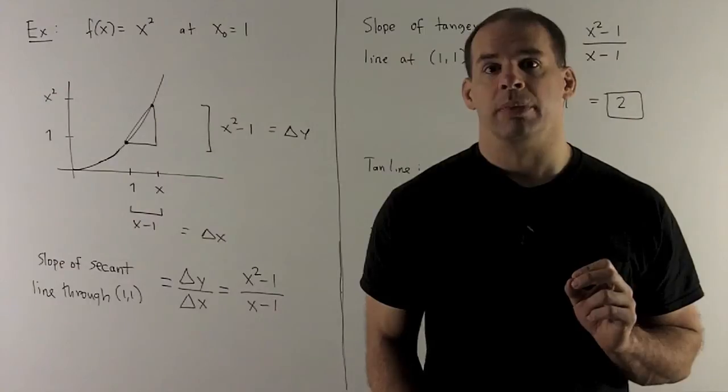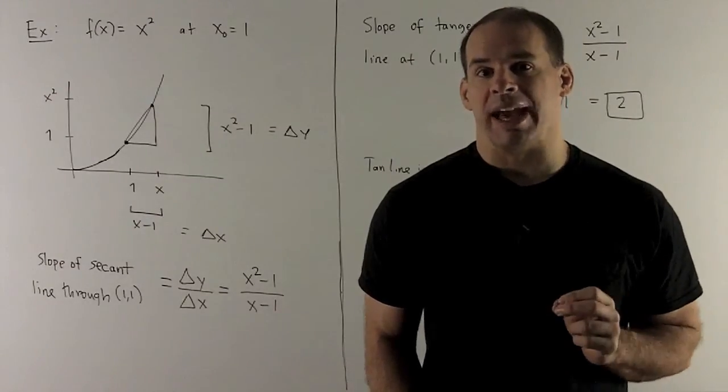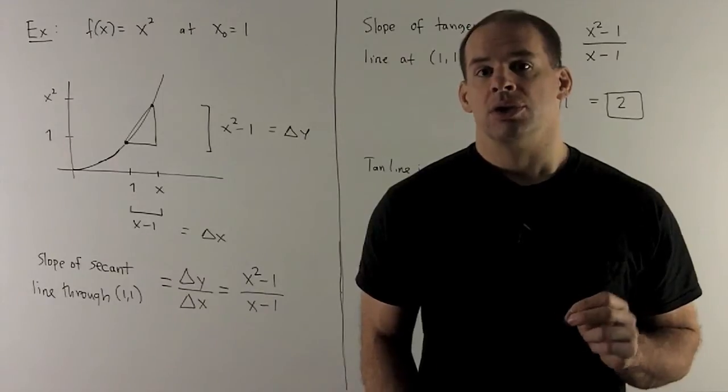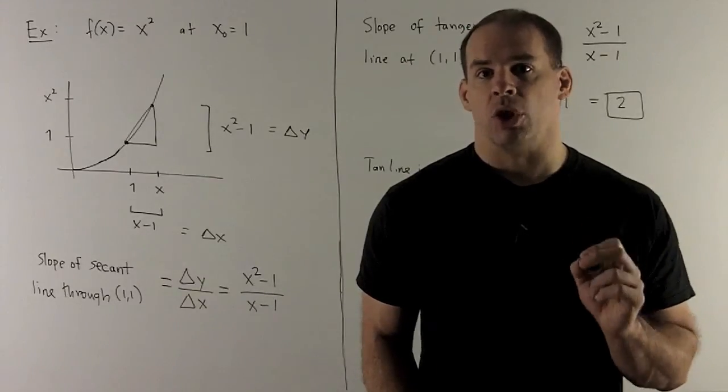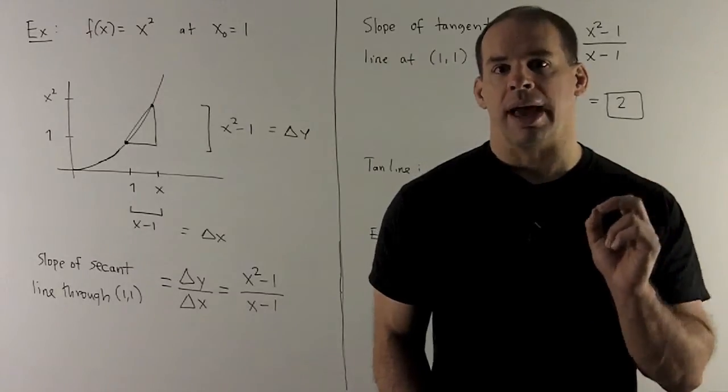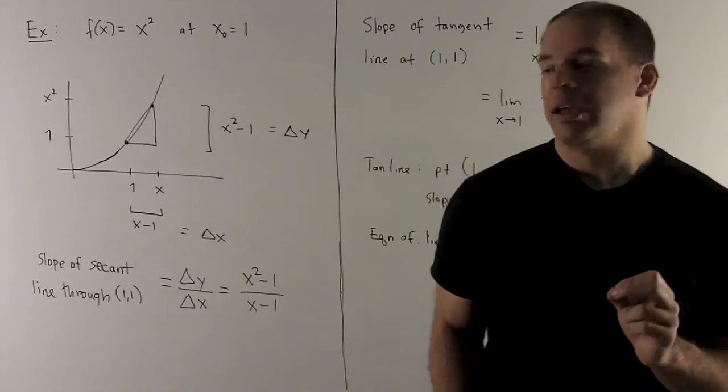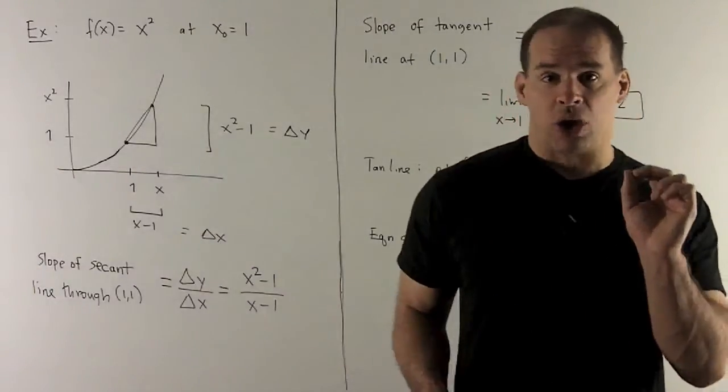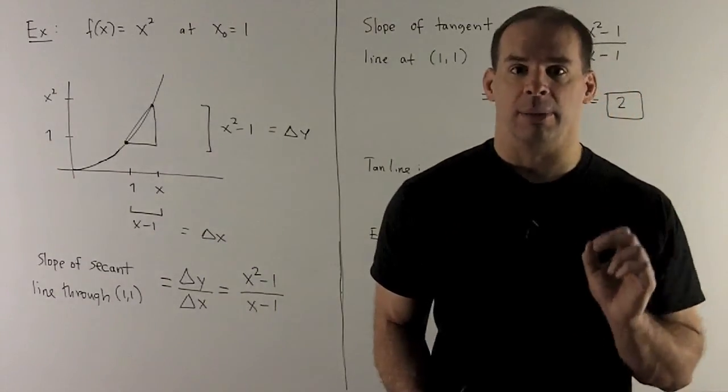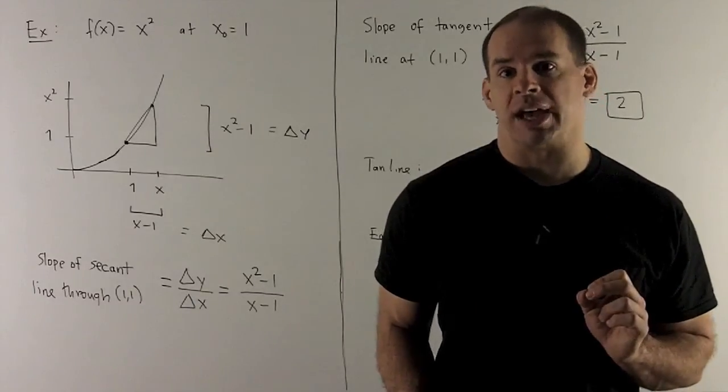Let's look at a concrete example. Our function is going to be f of x equal to x squared. Our point is going to be x0 equal to 1. So what we want to do is we want to find the slope of the tangent line at x0 equal to 1. Now on the x-axis, we're going to have the points 1 and x, and we're going to let x drive down to 1. So we want to take the limit of x going to 1. Our delta x there is going to be equal to x minus 1.